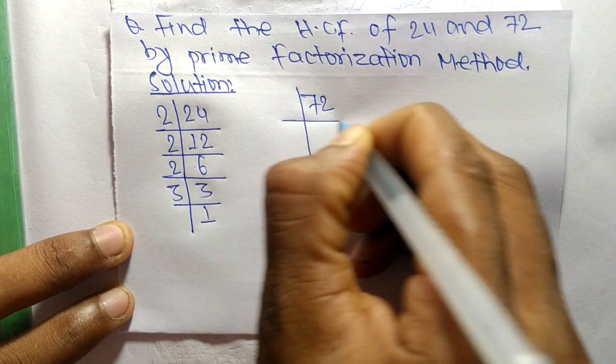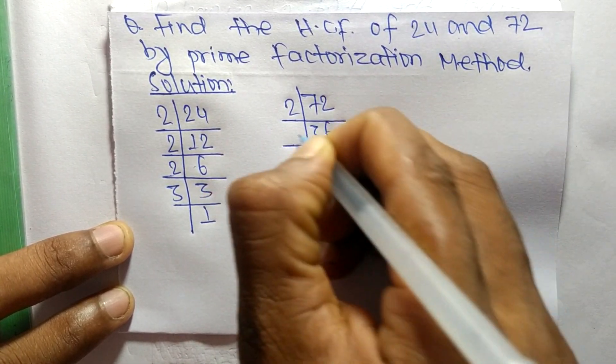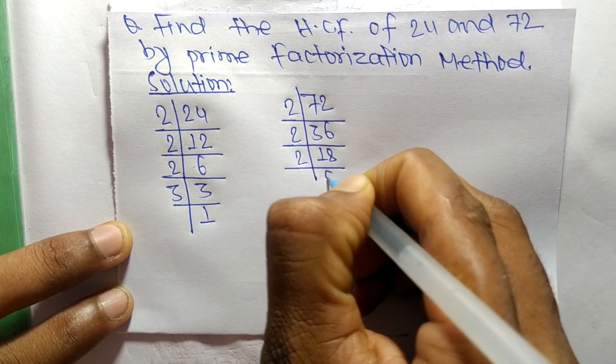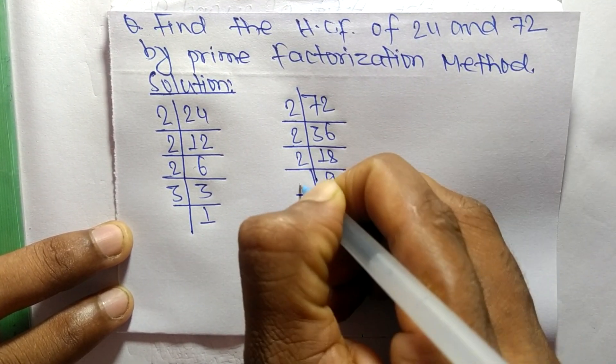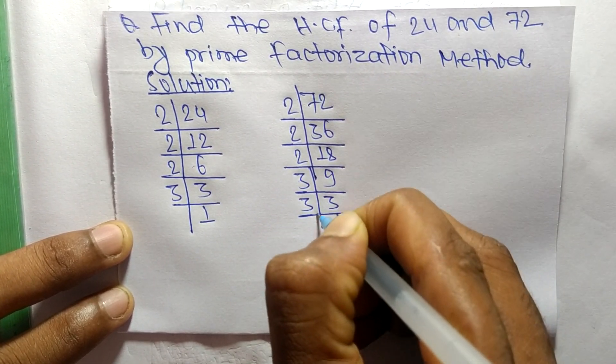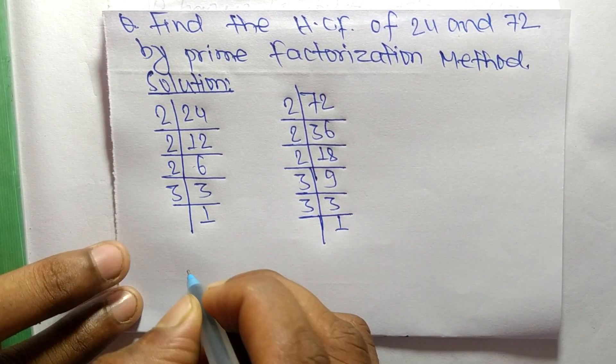The prime factors of 72 are: 2 times 36 equals 72, 2 times 18 equals 36, 2 times 9 equals 18, 3 times 3 equals 9, and 3 times 1 equals 3.